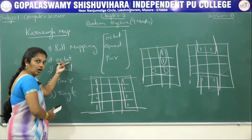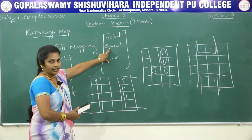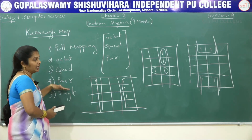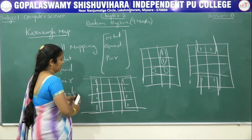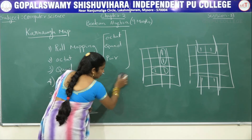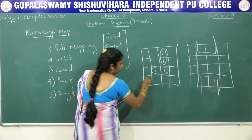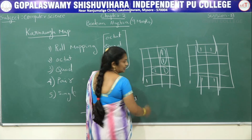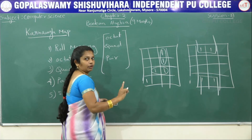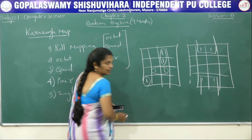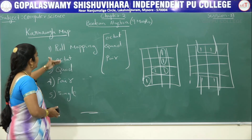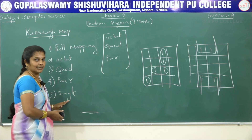The order to check groupings is: first roll mapping — under that, check octate, quad, then pair. After that, check octate, then quad, pair. Then finally, you have to check for single. Single means: if here I am having 1 and only one variable and I am not able to circle any adjacent 1, then this is a single. First you have to check these rules: roll map, octate, quad, pair, and then single.